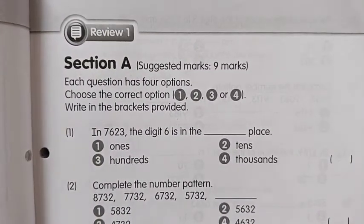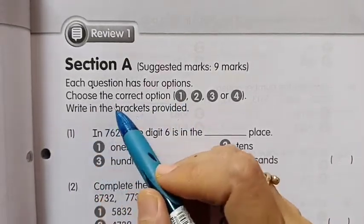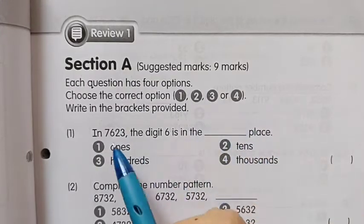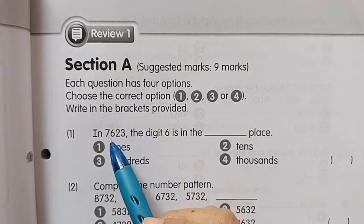Review 1, Section A. Each question has four options. Choose the correct option 1, 2, 3, or 4, and write in the brackets provided.